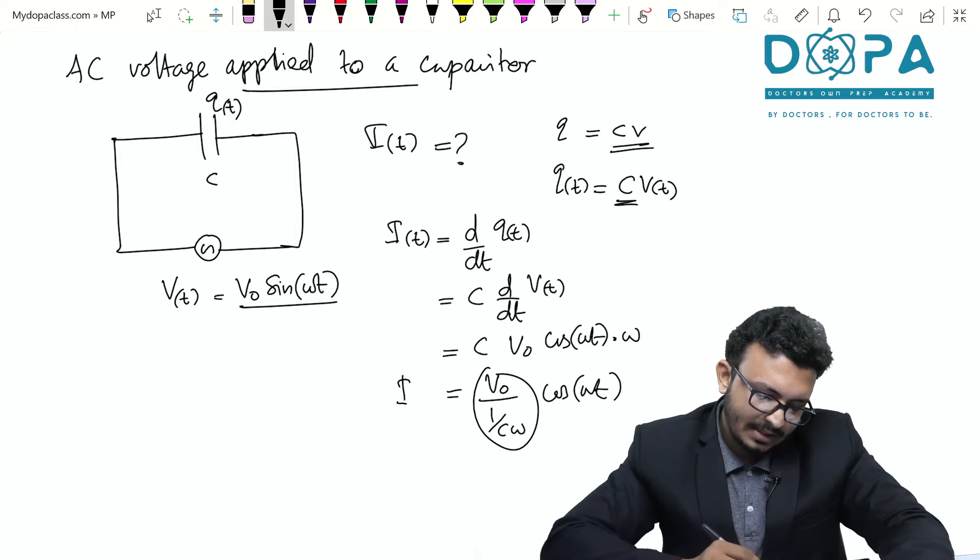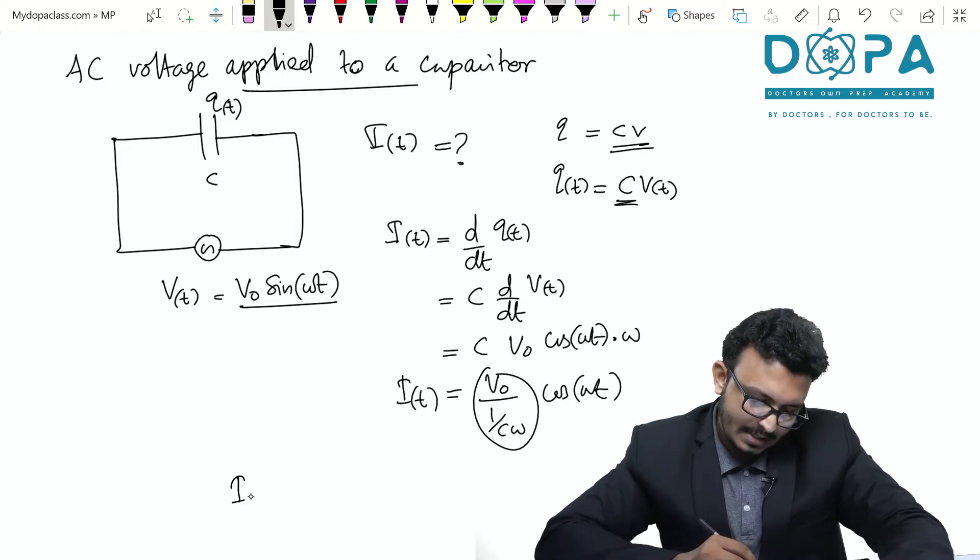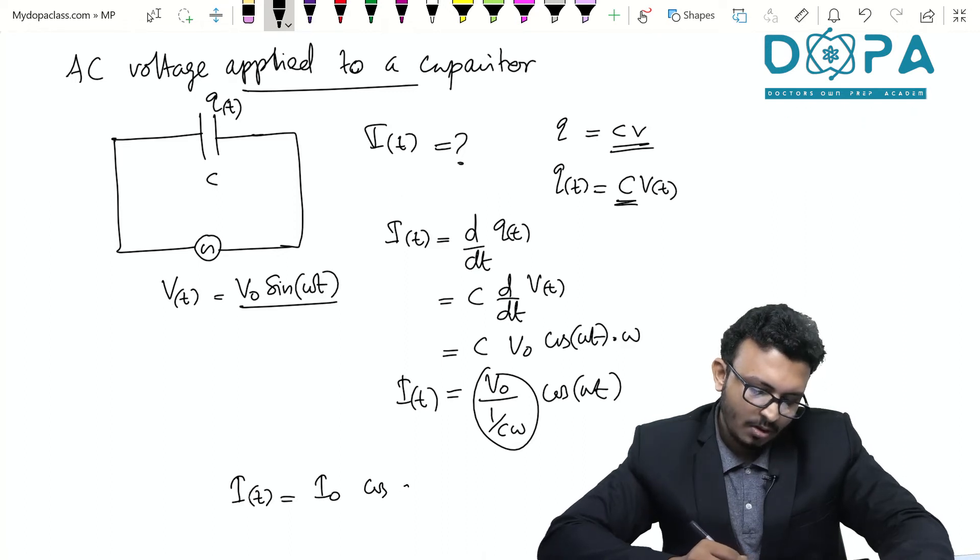This V0 / (1/Cω) is called I0. So that means I(t) is equal to I0 cos ωt.